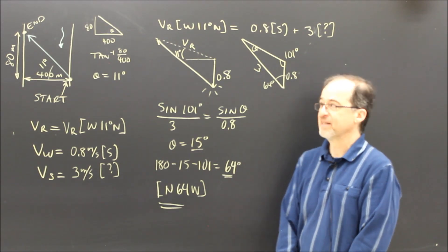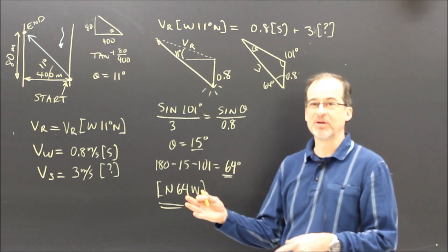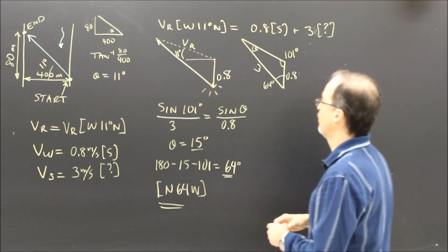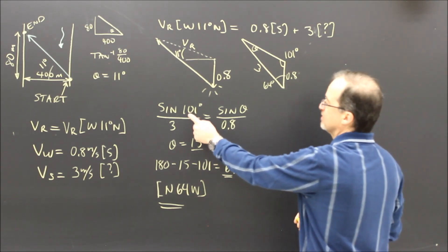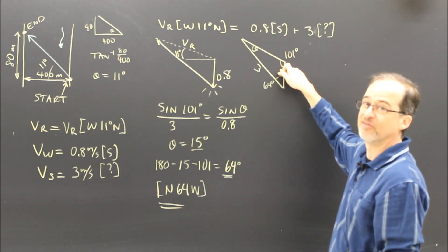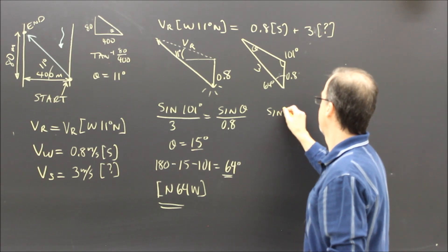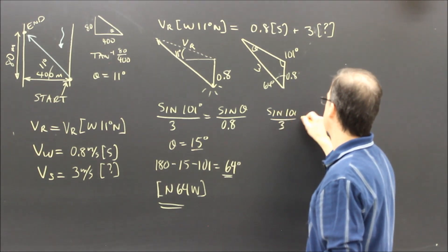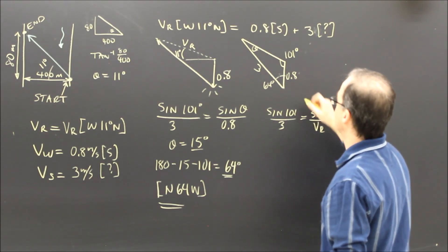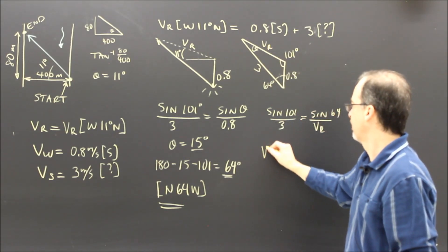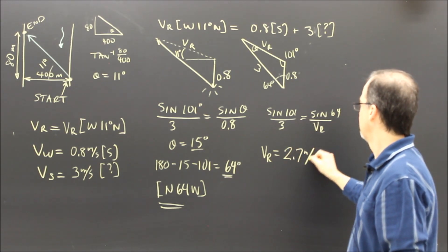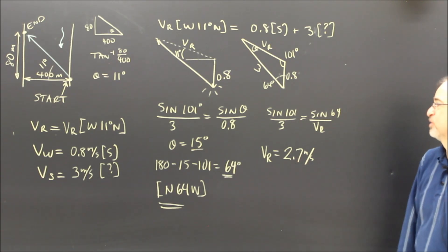The next part is how long does the trip take. To find the time I need the resultant velocity. Using the sine rule again: sine of 101 over 3 equals sine of 64 over VR. Solving for that gives VR equals 2.7 meters per second.